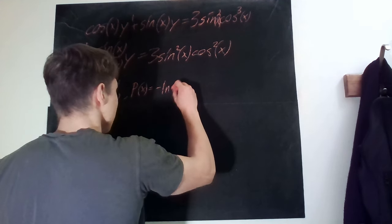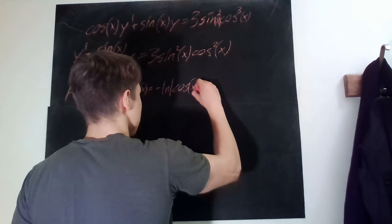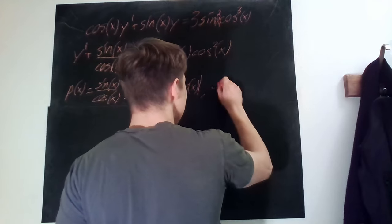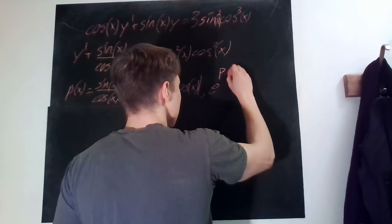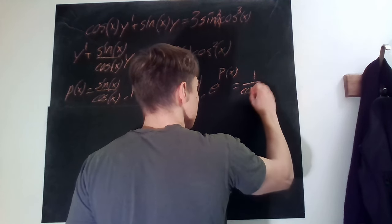is minus ln of cosine of x, meaning that e to the power of our primitive is therefore one over cosine of x.